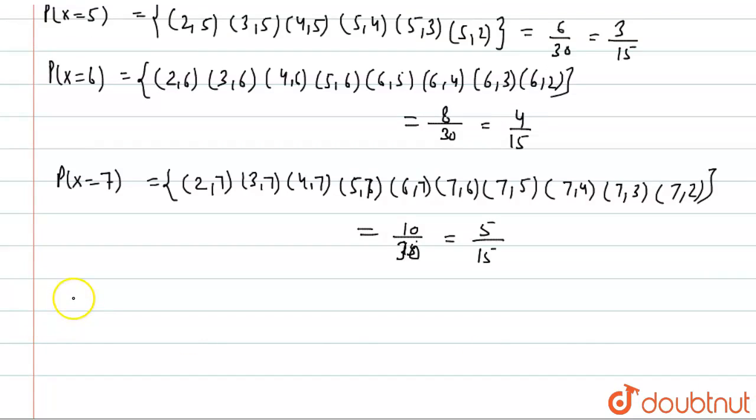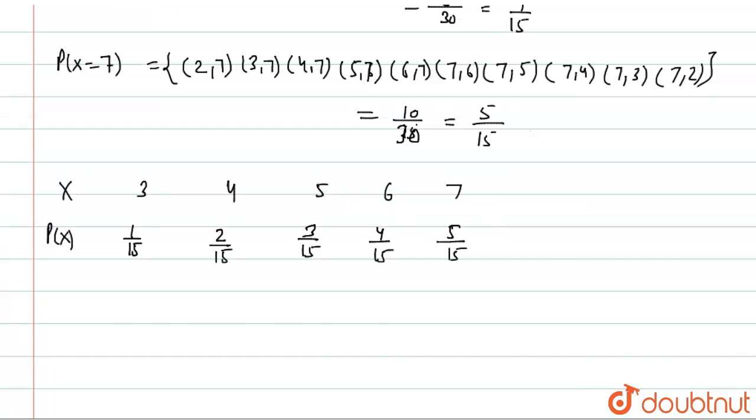Now probability distribution: X values are 3, 4, 5, 6, and 7. At X=3 this is 1 by 15, this is 2 by 15, this is 3 by 15, 4 by 15, and 5 by 15. Now we will find mean.